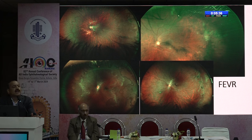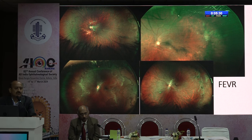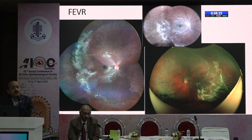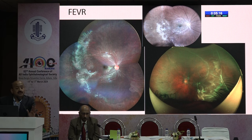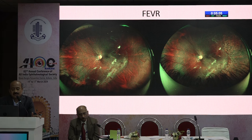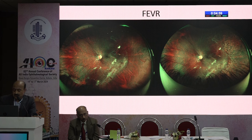FEVR patients need laser treatment to the avascular retina depending on the individual scenario. Asymptomatic patients with minimal signs can be observed — observation versus treatment is a decision made after detailed follow-up. Some patients may not have disc drag or vascular problems and present directly with avascular areas. Detachments are very common. One patient of FEVR presented with lotus and 6/6 vision but showed avascular retina reaching almost a couple of disc diameters from the fovea — this patient needs treatment and close follow-up.